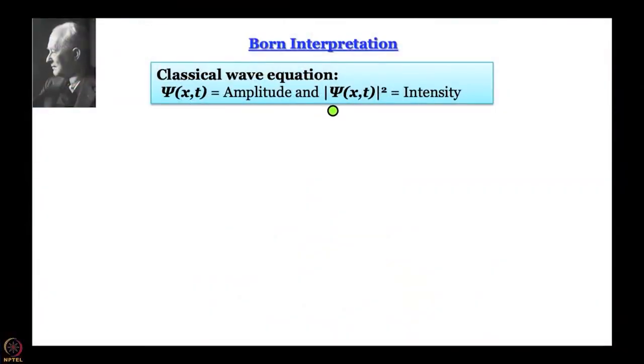If you think about a classical equation for the oscillation of a string, or the oscillations produced on the surface of a tabla diaphragm, one thing is known for sure: mod-psi-squared—which means psi-star multiplied by psi—gives an idea of intensity. Think of sound waves or electromagnetic waves of light: the square of displacement has to do with intensity.